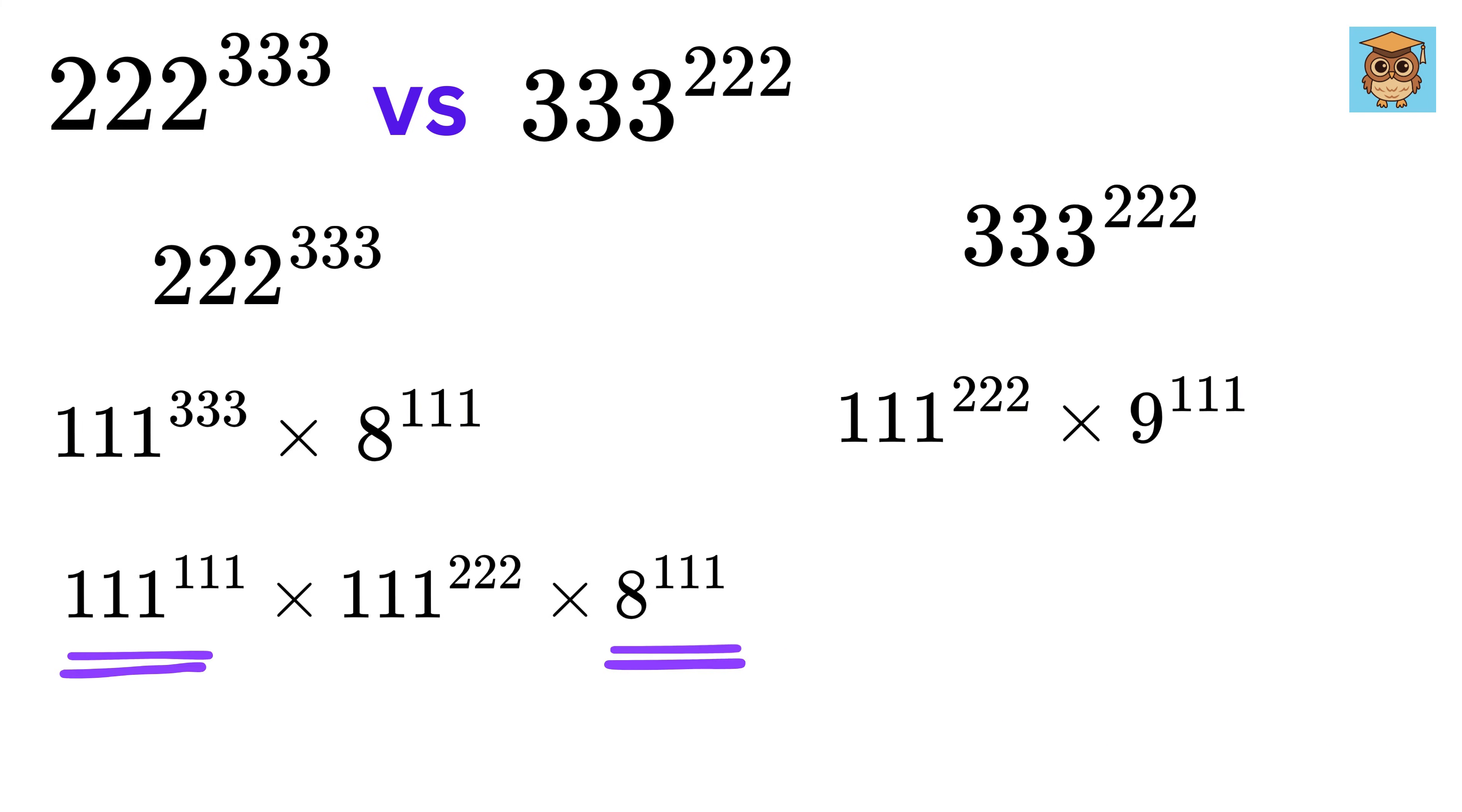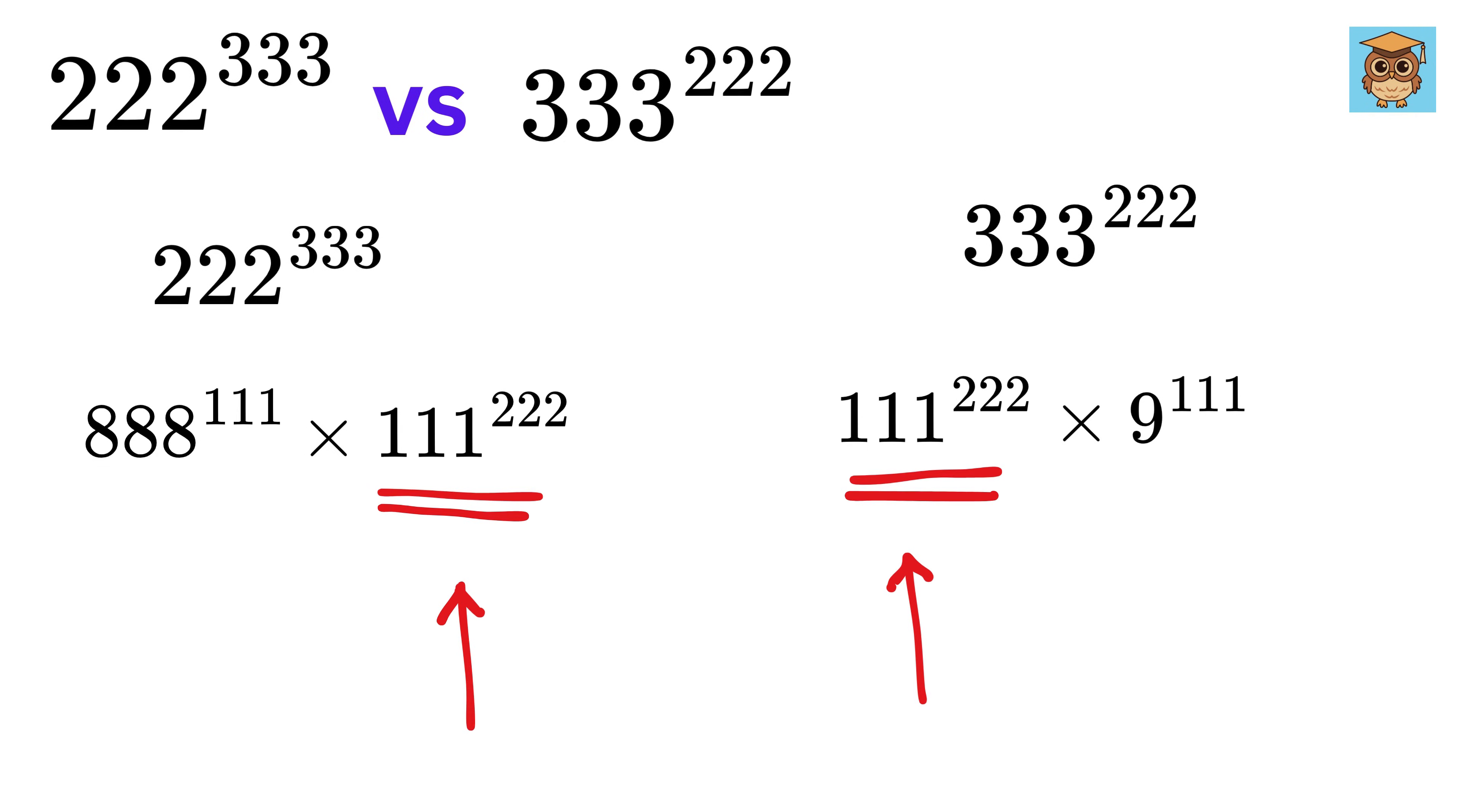Now both of them have the same exponents. Hence, use this power rule. This will become 111 times 8 or 888 raised to 111. And we are almost done. Look at both of these sides. We have this thing as common, so delete it from both ends.